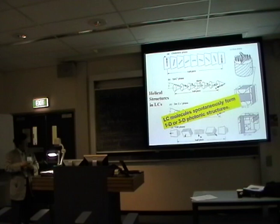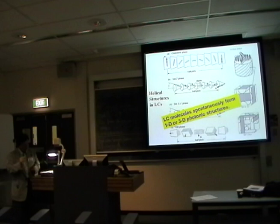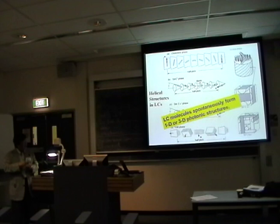In this way, there are many types of periodic structure in liquid crystal. We can say liquid crystal molecules spontaneously form one-dimensional or three-dimensional photonic structures. As I said at the beginning, to make a photonic crystal you have to fabricate a very precise structure at optical length scales. However, in liquid crystal, they form spontaneously the periodic structure — that is one of the important points.